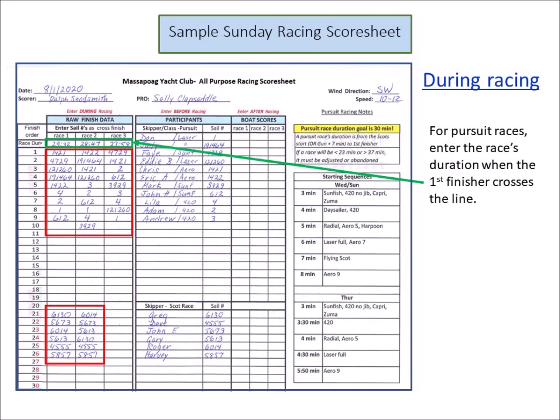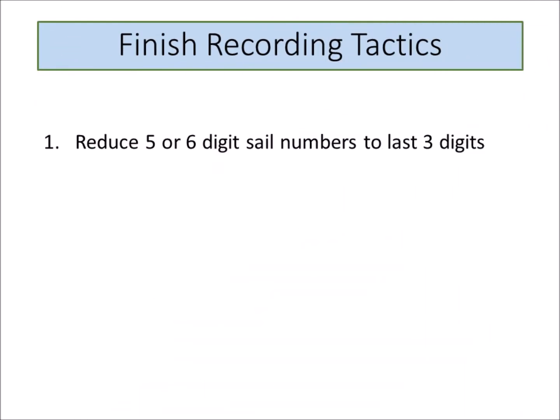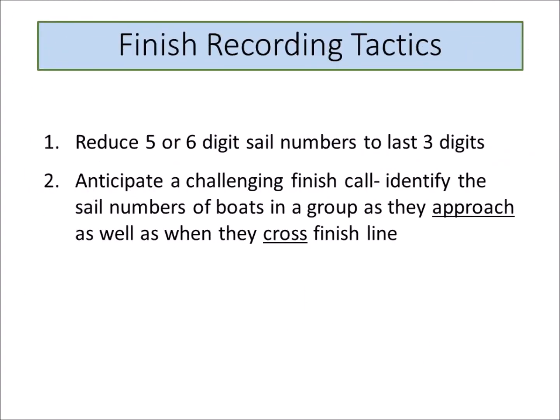When boats cross the finish line one at a time with space between them, recording finishes is simple. If there are lots of boats or close finishes, the job is more challenging. Here are some tactics that can make the job easier. When calling and recording sail numbers, reduce long five or six digit numbers — particularly laser and sunfish numbers — to the last three digits. Make sure to check for duplicates before racing begins. Four-digit numbers could be reduced to three as well, but it's easy enough to break them into two two-digit numbers when calling finishes, like 4619 or 5613. Recognize that a challenging call is coming when a group of close finishers approaches the line. Have the scribe note the sail numbers of the coming group in the form's margins before the boats reach the finish. This way the numbers will be on paper for reference if some of them are not clearly visible when they arrive at the finish line.